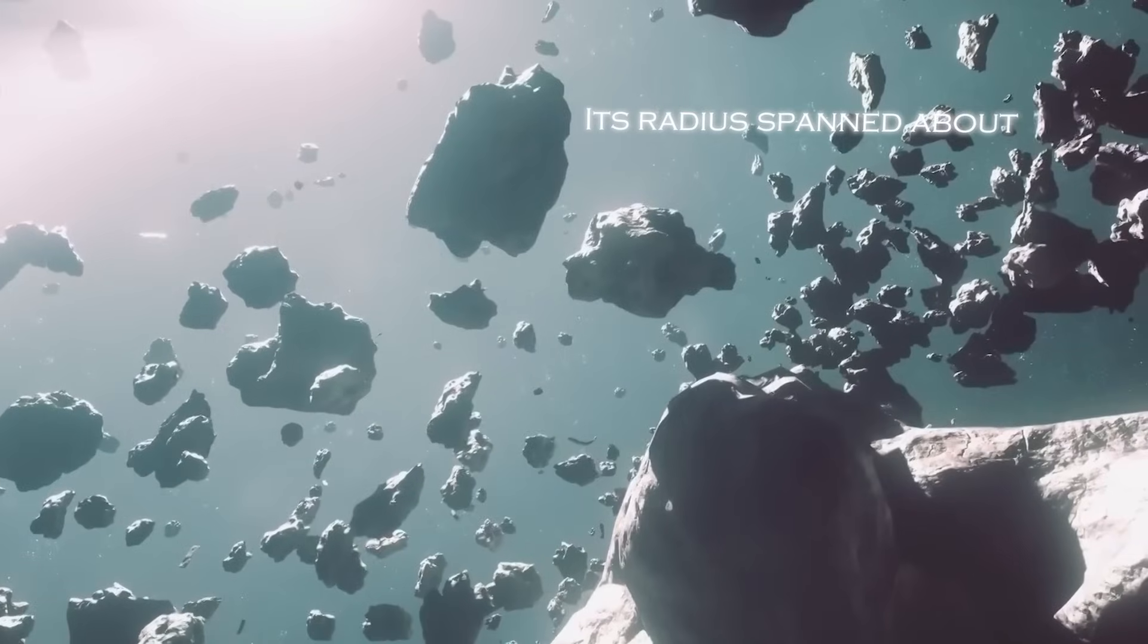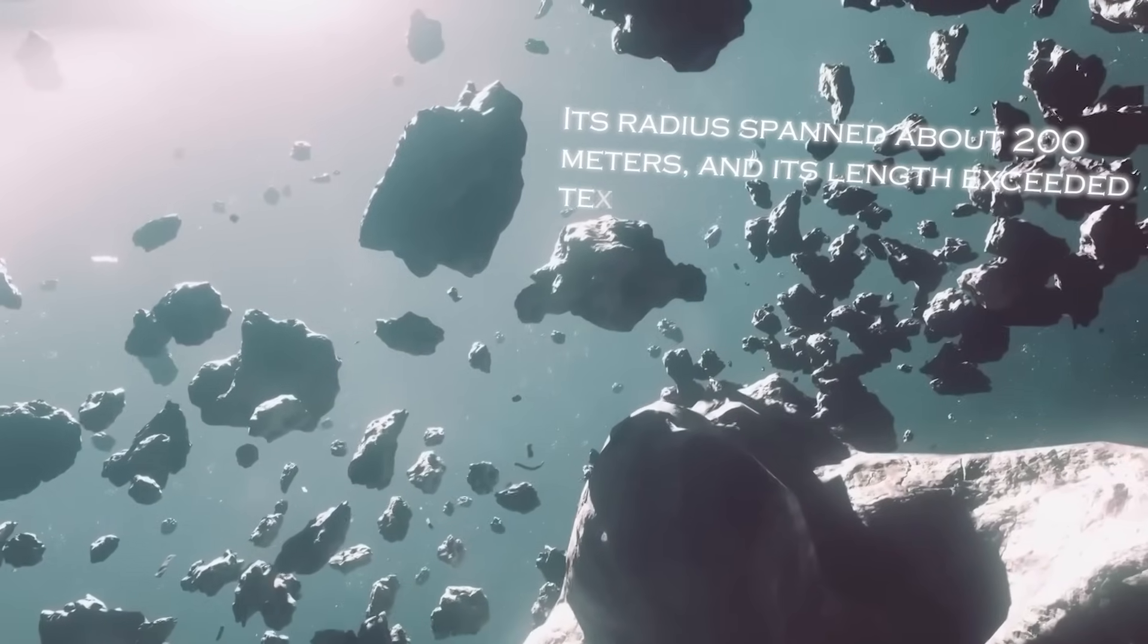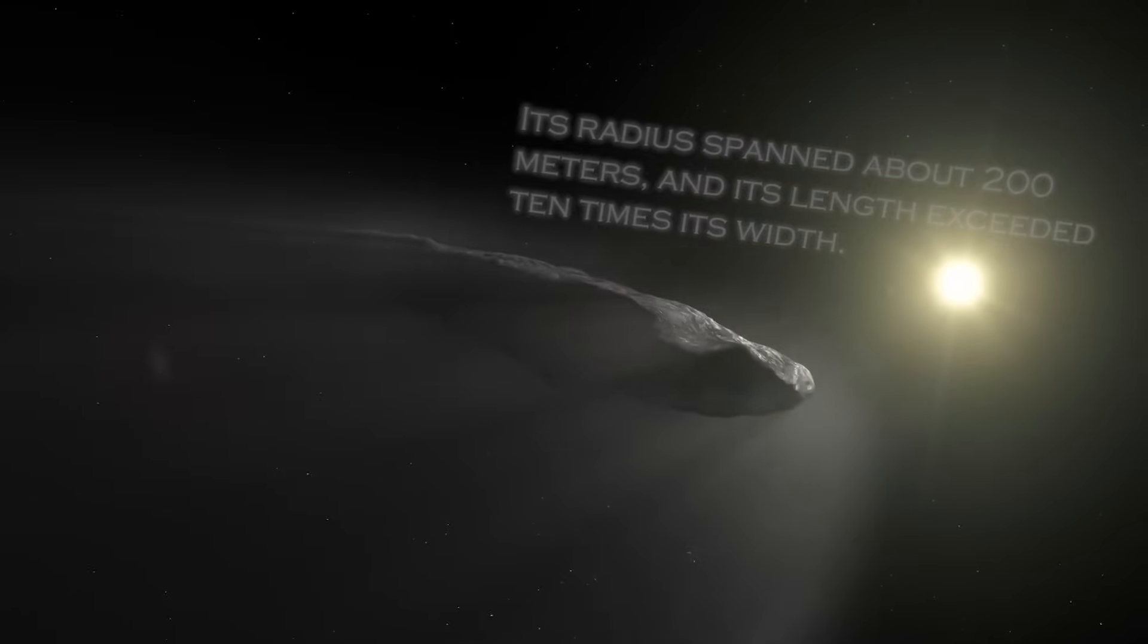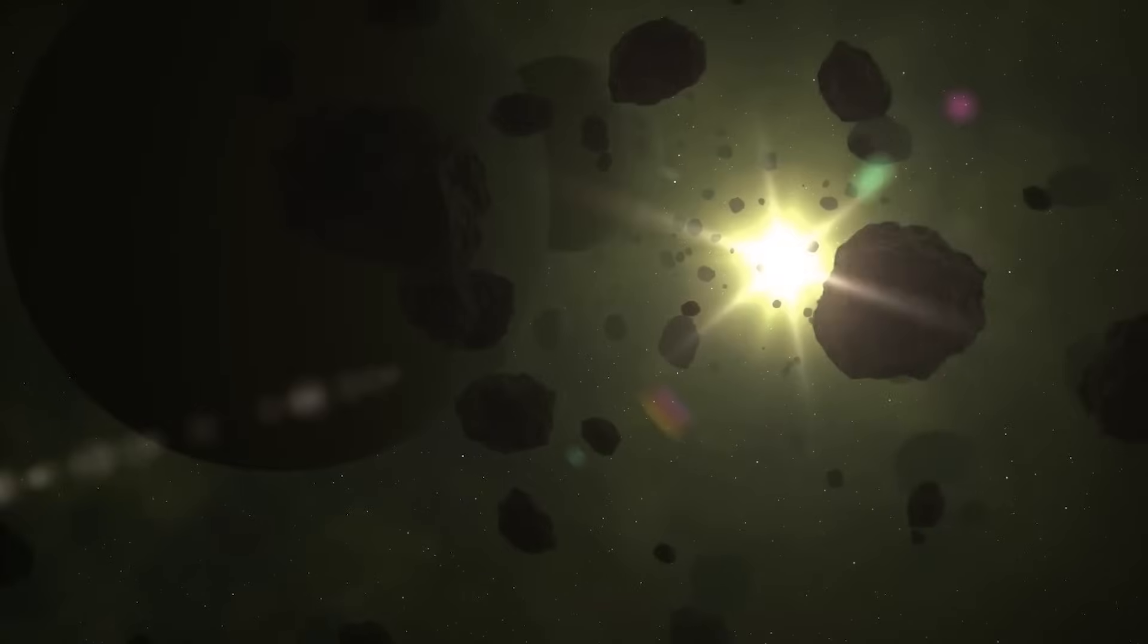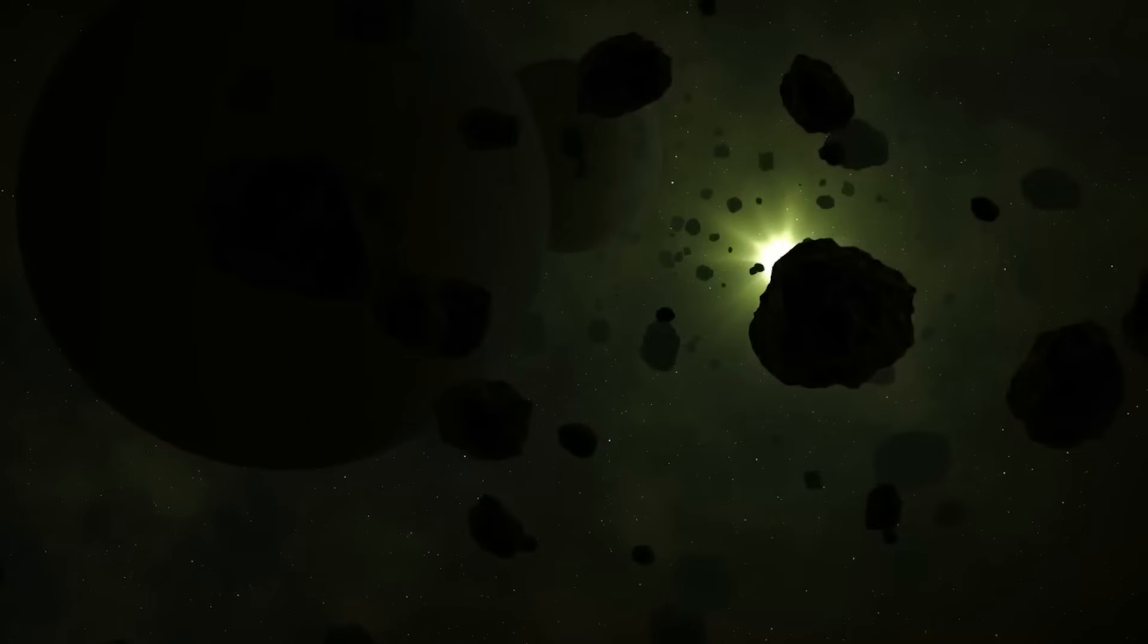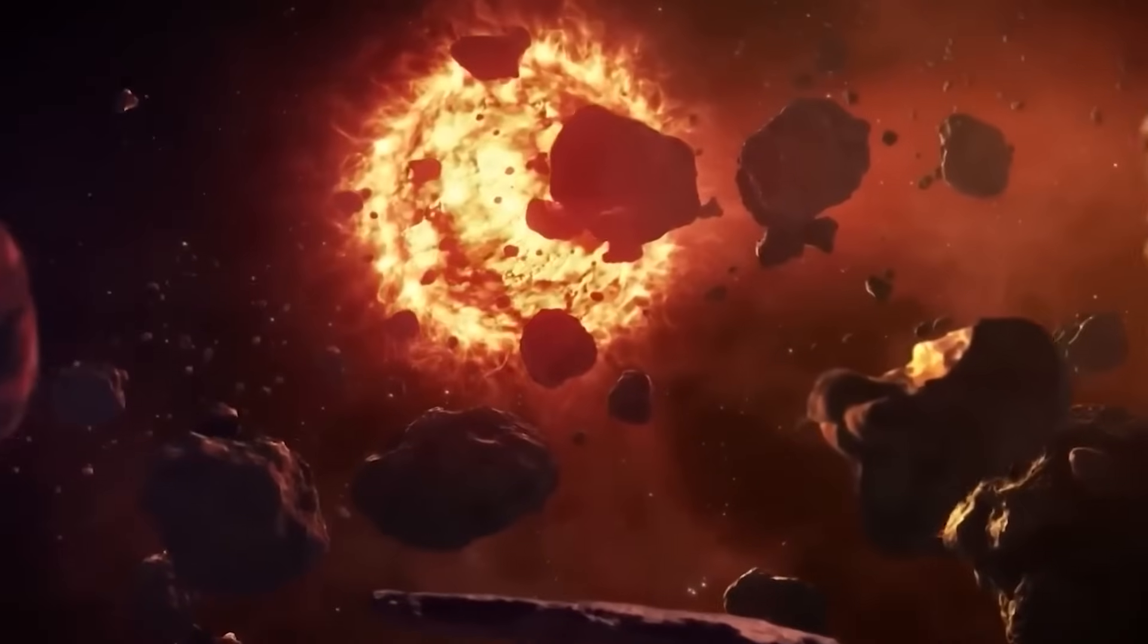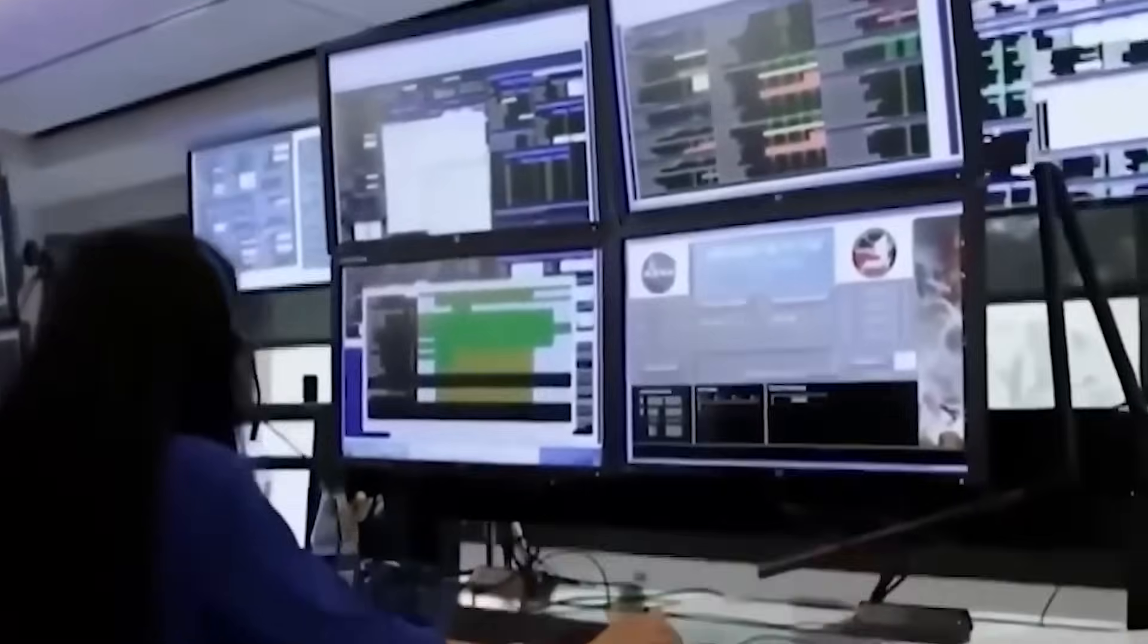Its radius spanned about 200 meters, and its length exceeded 10 times its width. These dimensions are exceptional when considering its presence in the interior of our solar system. Normally, our minds associate celestial objects with spherical shapes, influenced by the gravitational forces operating within them.